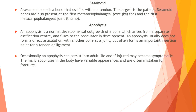Sesamoid. A sesamoid bone is a bone that ossifies within a tendon. The largest is the patella. Sesamoid bones are also present at the first metatarsal phalangeal joint in the big toe and the first metacarpal phalangeal joint in the thumb.